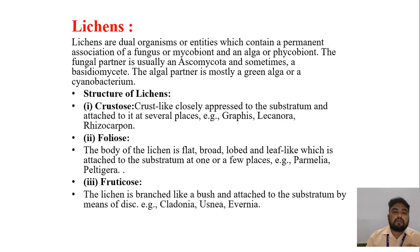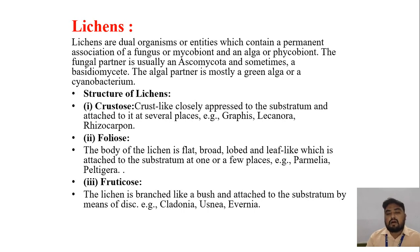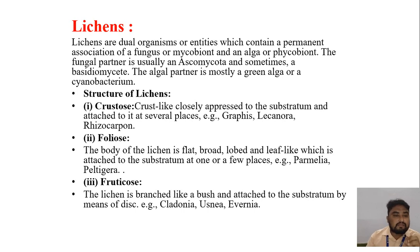Lichens are dual organisms or entities which contain a permanent association of a fungus (mycobiont) and an alga (phycobiont). The fungal partner is usually an Ascomycota and sometimes a Basidiomycota. The algal partner is mostly a green alga or a cyanobacterium.